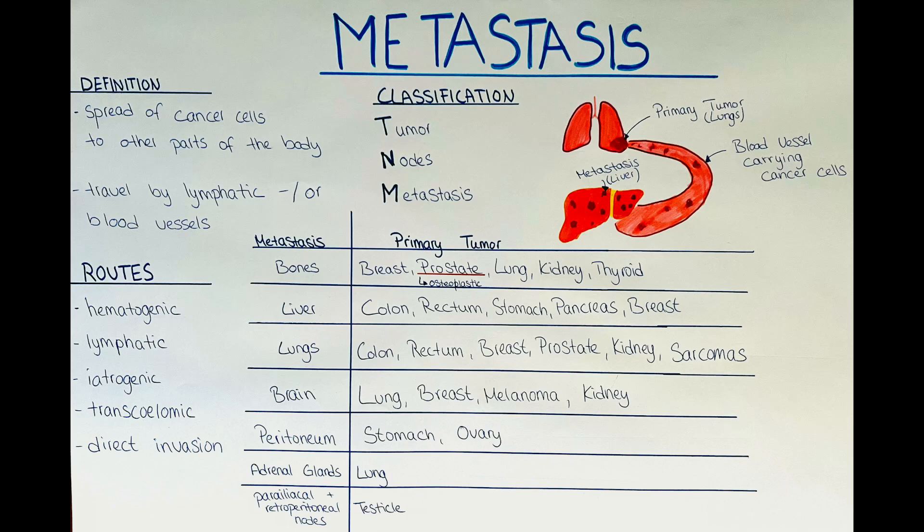The last site of metastasis I want to mention is the peritoneum, which is the lining of the abdominal cavity. Think about it as a bag containing our abdominal organs, and it is often affected by ovarian, colon and stomach cancers — then we call it a peritoneal carcinosis.